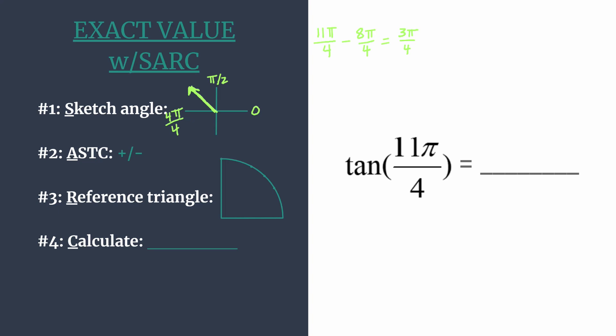And now we can use ASTC to find the sign for our exact value. Think all students take classes, and it's simply telling us which trig function is positive in each quadrant. So all are positive in quadrant 1.